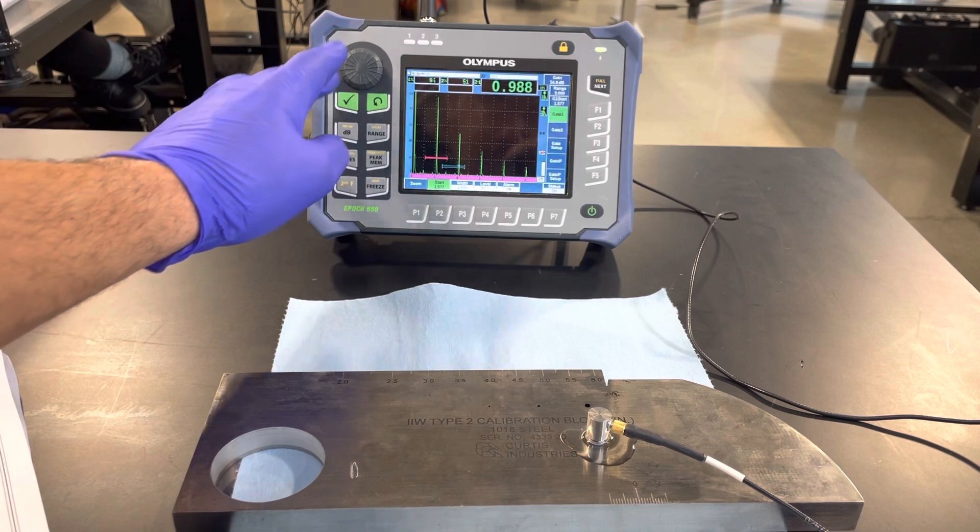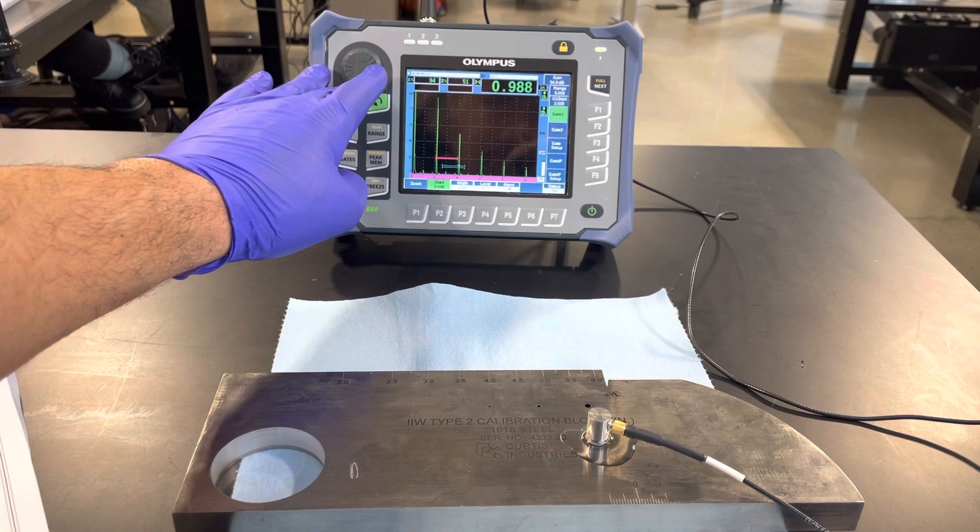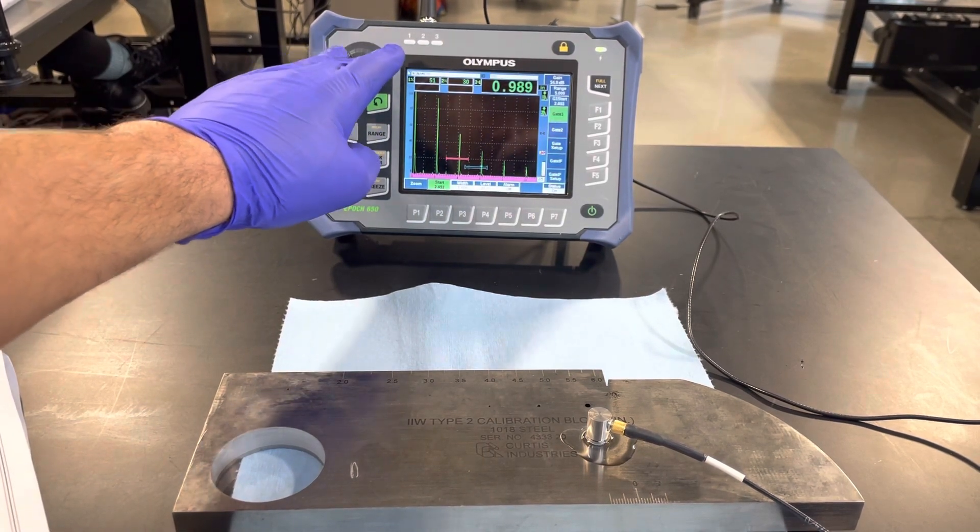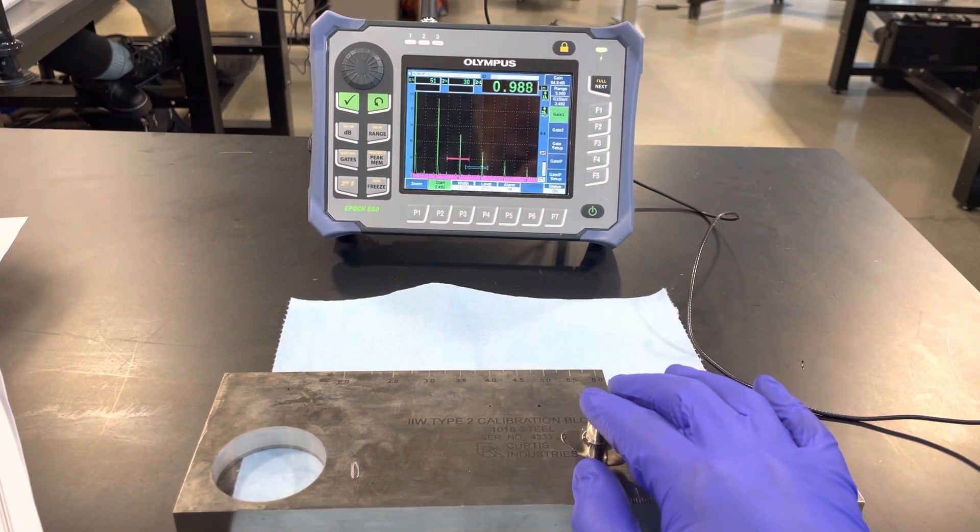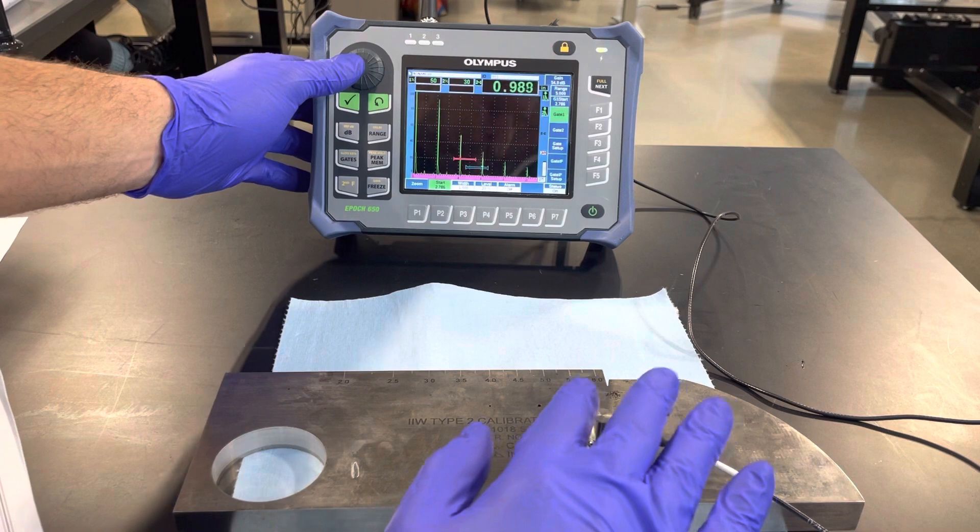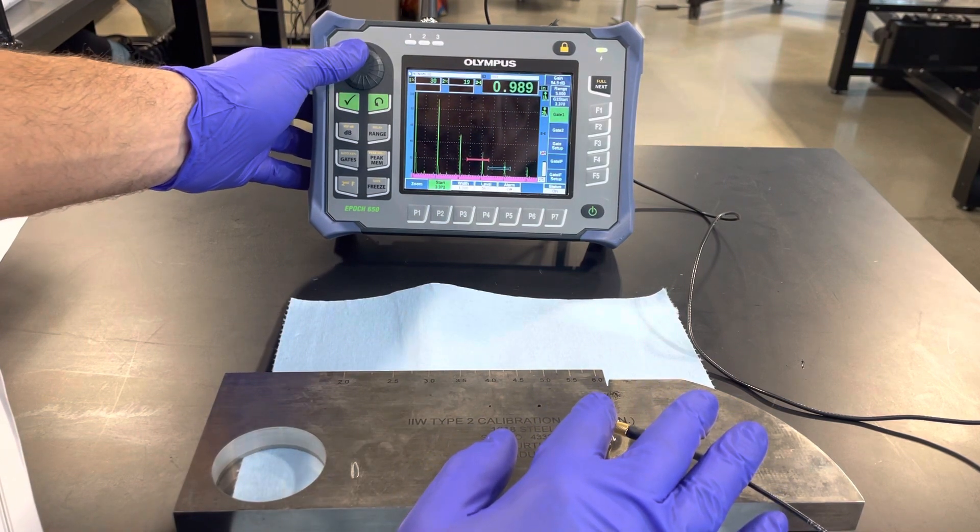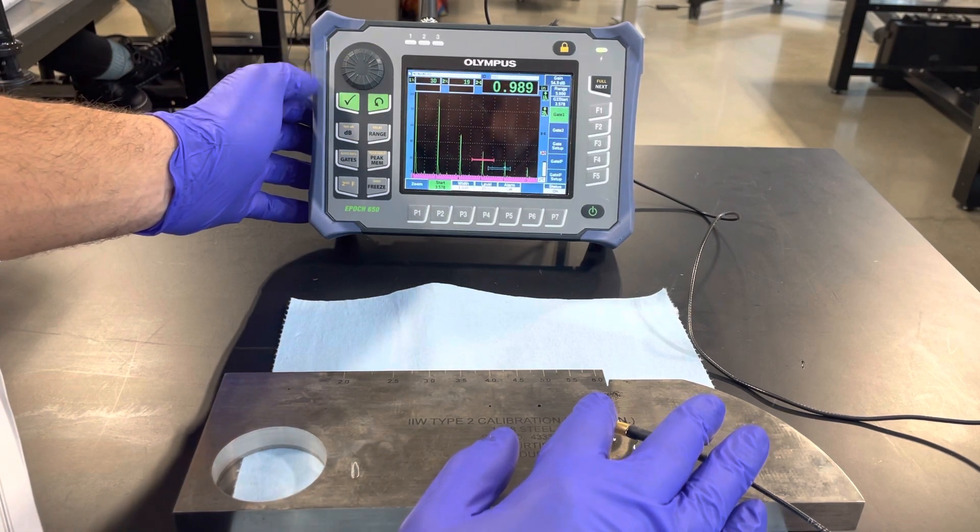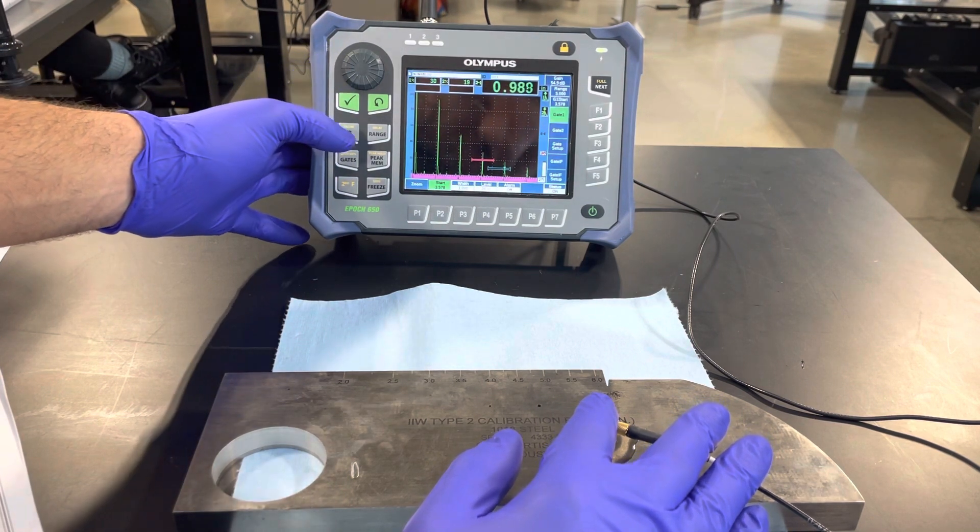We're going to run with the same 0.988 for the next one. Yep. We're at about the same 0.989. So I would say this unit is calibrated for horizontal linearity.